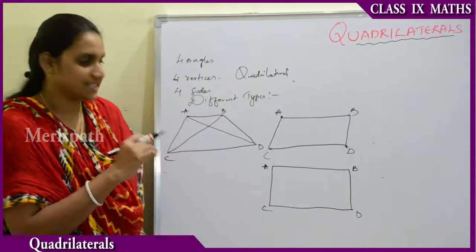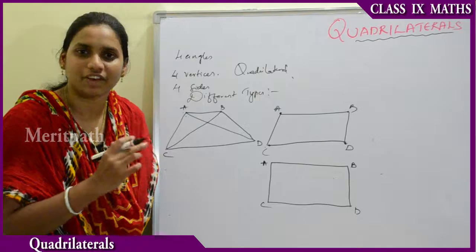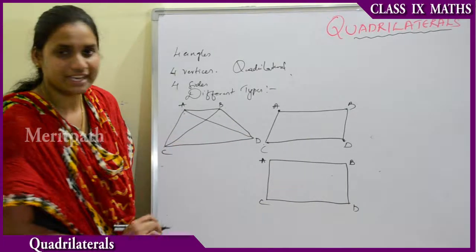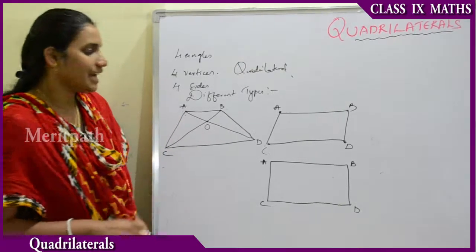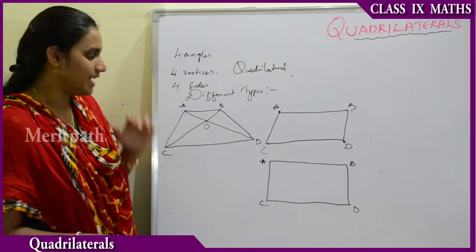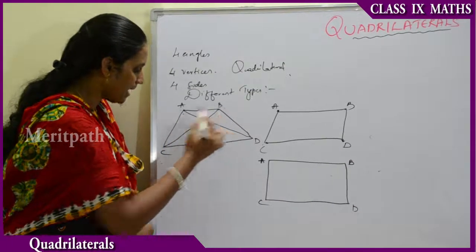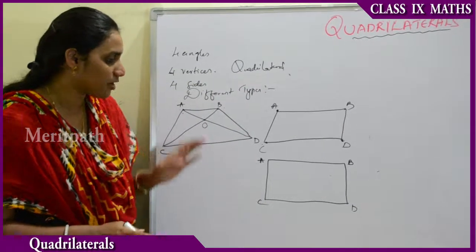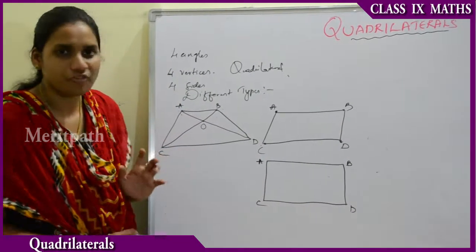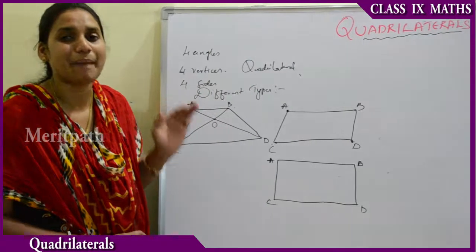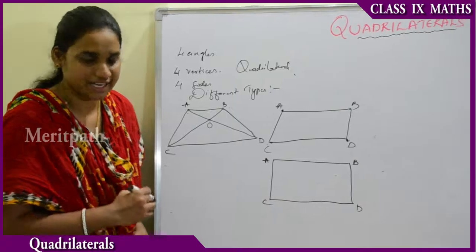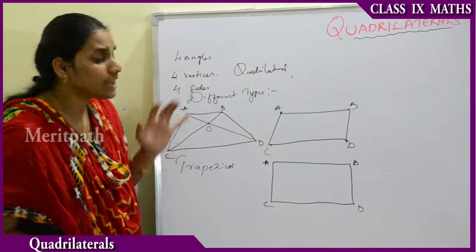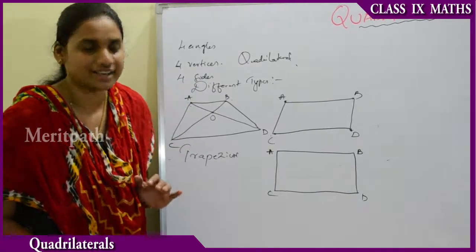A quadrilateral consists of four sides, four vertices, and four angles. When we join the opposite vertices — that is, B to D and A to C — they form the diagonals. The diagonal divides the trapezium, parallelogram, or any quadrilateral shape into two equal parts. A quadrilateral has two diagonals: AD and BC, with their intersecting point labeled O.